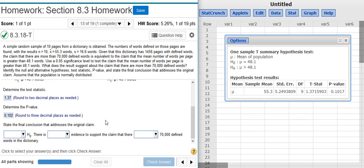The last part of this problem asks us to state the final conclusion. To do this, we're going to compare our p-value with our significance level. We have here in the problem statement it says use a 5% significance level.